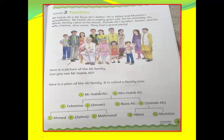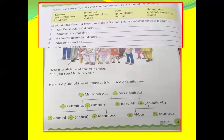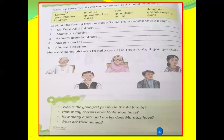Now this family tree — keep it in your mind. With the help of this family tree we will do page number four. There are some questions and some relations we will do with the help of this family tree. Now look at page number four. Here are some words we use when we talk about relations — not only for Mr. Habib Ali's family, but for all of our relations.